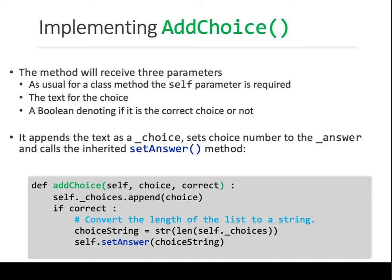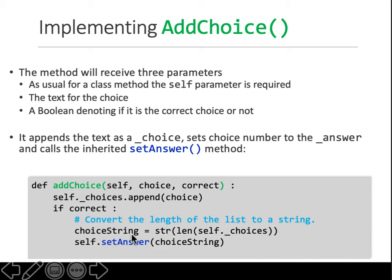In this ChoiceQuestion, we have to add the choices. We are declaring a function called addChoice, in which you get the choice and whether that choice is correct or not. In the method, remember the empty list called choices — you're appending a given choice to that list. And then if 'correct' is true, if true is passed here...